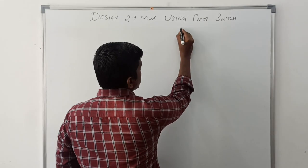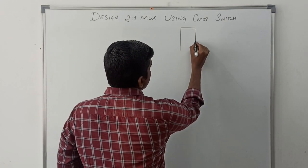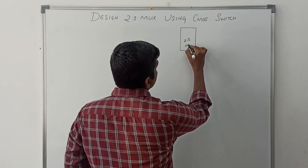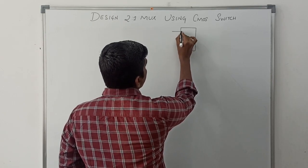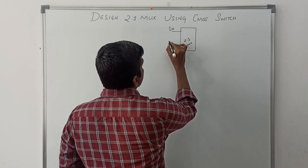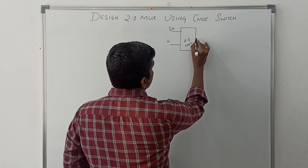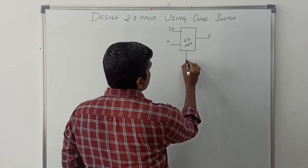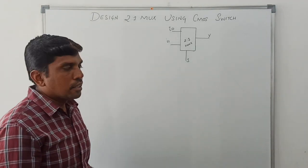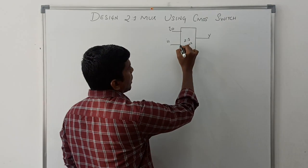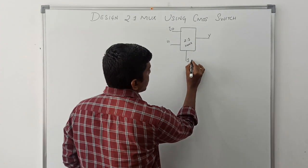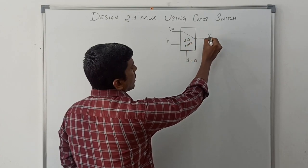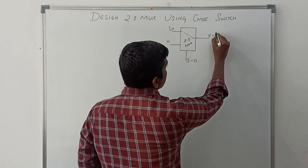First, I draw the block diagram of a 2-to-1 mux. It is a 2-to-1 mux. It has 2 inputs, namely I0 and I1. This one is the output — Y is the output. S is the selection line. Based on the selection line, I0 and I1 are connected to the output. For example, when S equals 0, I0 is connected to the output, so Y equals I0.